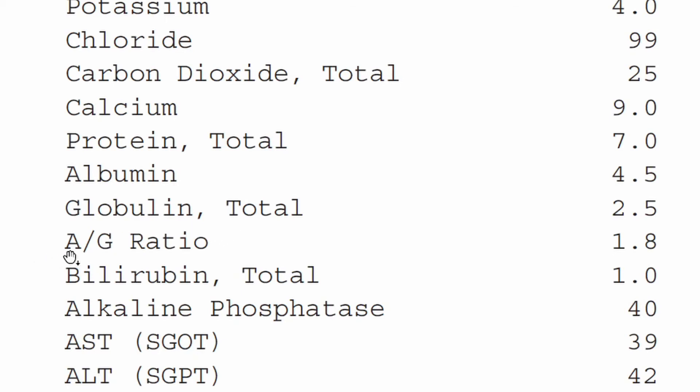Then you've got the albumin-to-globulin ratio. If this ratio is too high, maybe you have low immunoglobulins, or maybe you have leukemia. If this ratio is low, it could be due to having too much globulin — which, as mentioned, could be multiple myeloma — or some type of autoimmune condition. Another reason for a low albumin-to-globulin ratio would be liver damage or kidney damage.